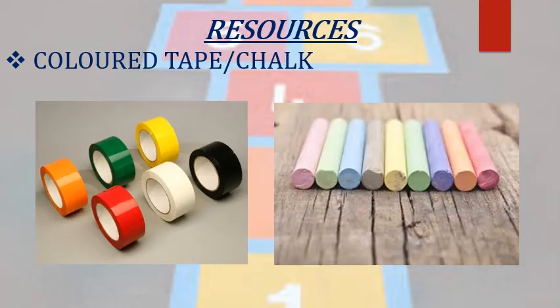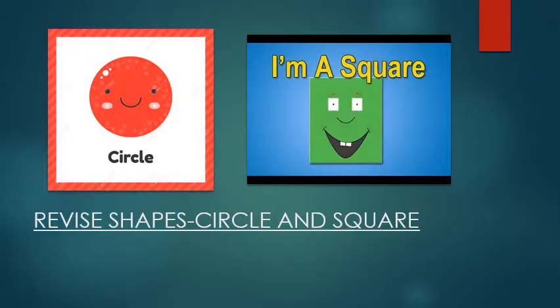The resources which are required for this activity are color tape and chalk. So children, the name of this game is Shapes Scotch. During this week, we have learnt two important shapes. And what were they children? They were circle and square.